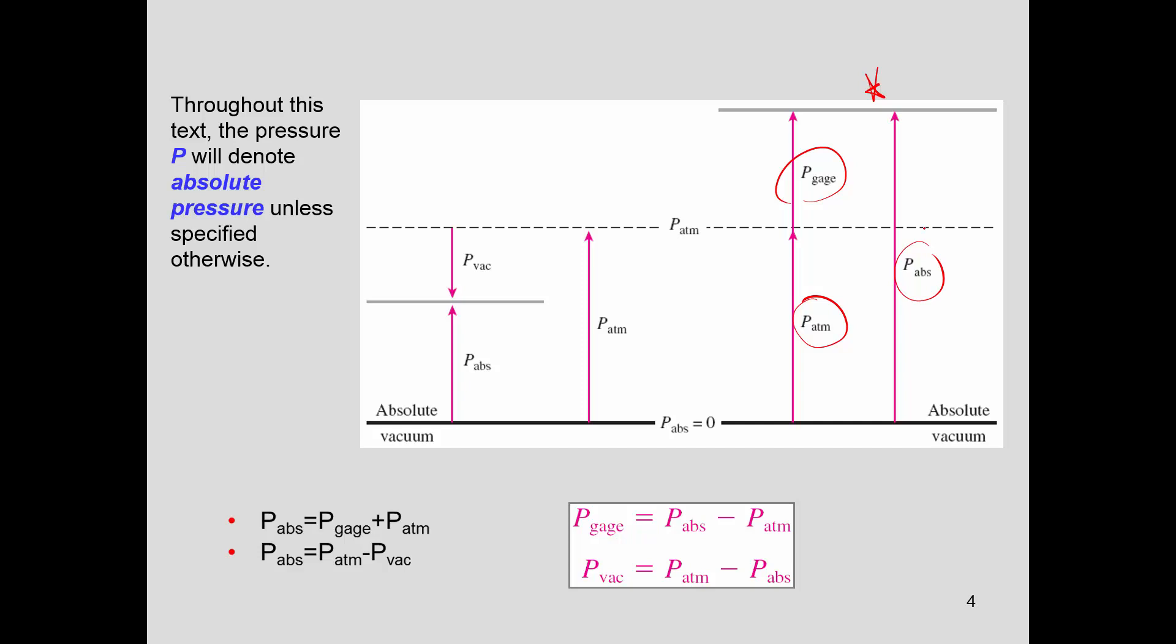So in that case, whenever you have a P absolute, of course, you'll have absolute pressure that is equal to the gauge plus atmospheric. And you have your P abs larger than your atmospheric pressure.